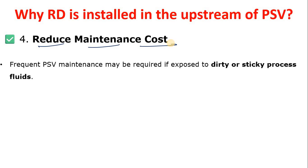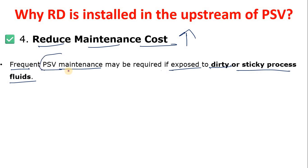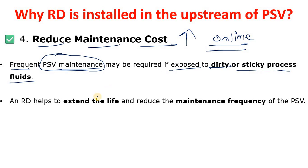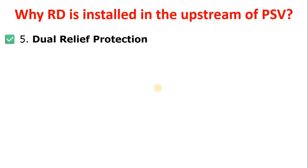The next reason is to reduce maintenance cost. If your PSV is frequently attended due to leakage or other issues, your maintenance cost increases. If the PSV internals are exposed to dirty or sticky process fluids, you may have to maintain the PSV on a very short schedule or even online. With an RD upstream, the PSV life is extended and maintenance can be deferred to a long scheduled shutdown or annual turnaround.